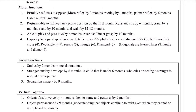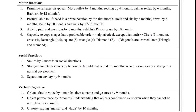Regarding posture: the child is able to lift the head in a prone position by the first month, rolls and sits by the sixth month, crawls by eight months, stands by ten months, and finally walks by around 12 to 18 months. They are able to pick and pass toys by six months.